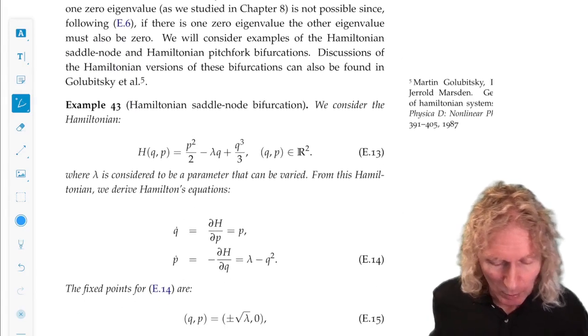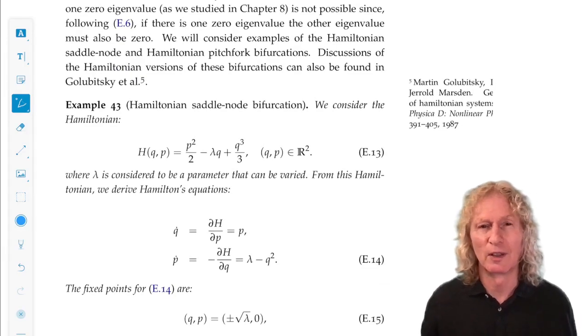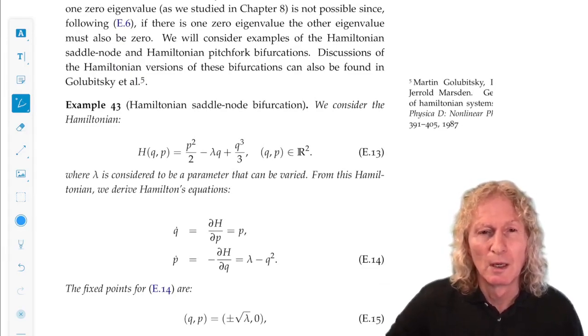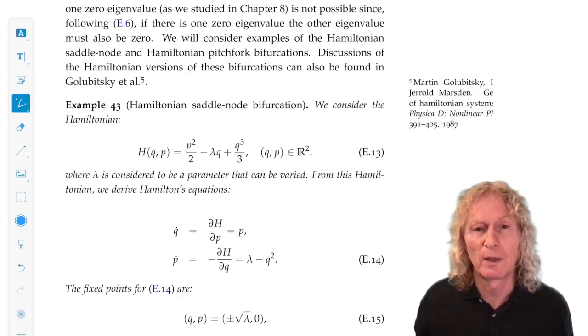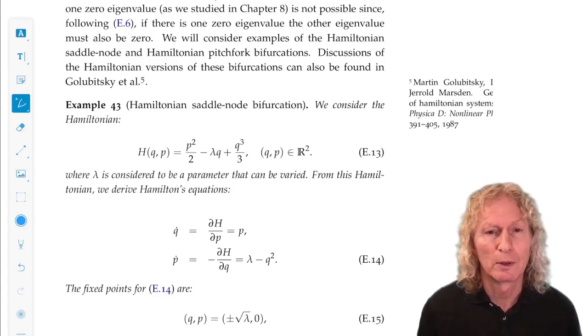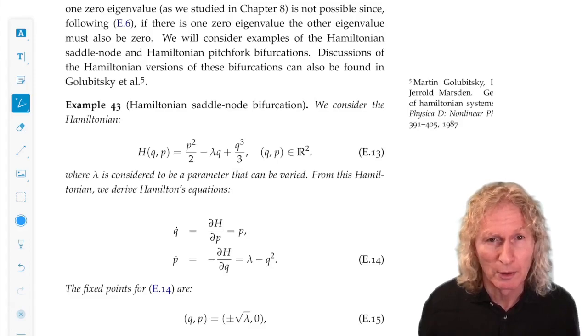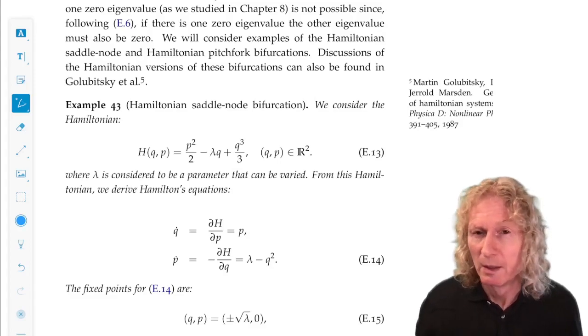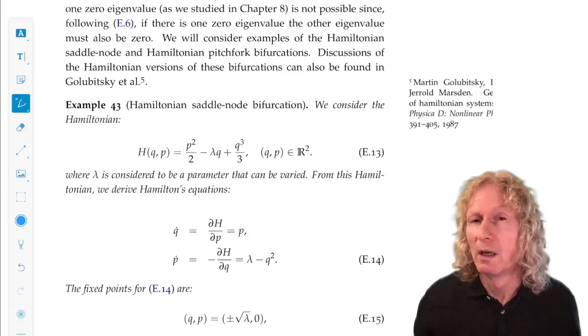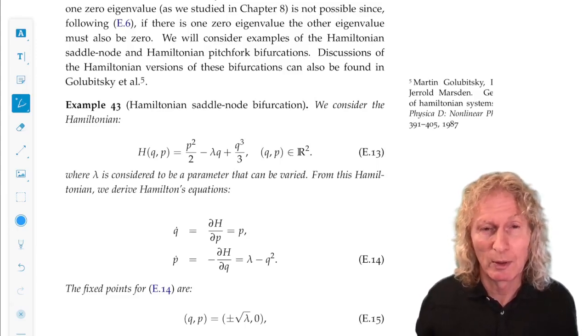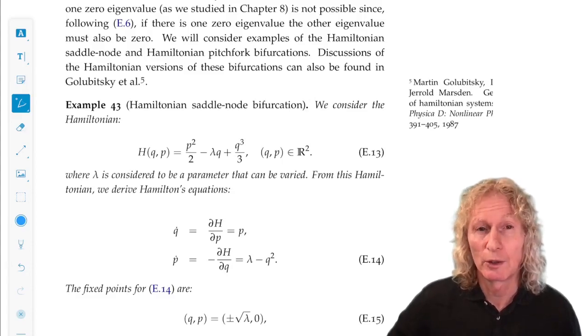All right, let's look at a couple of bifurcation examples. I want to talk about the Hamiltonian saddle node and the Hamiltonian pitchfork. Now when I did saddle node and pitchfork early on in chapter 8, these were one-dimensional bifurcations. But Hamiltonian systems, as I've developed it here, are two-dimensional. So it has to be two-dimensional, and we have this Hamiltonian function.